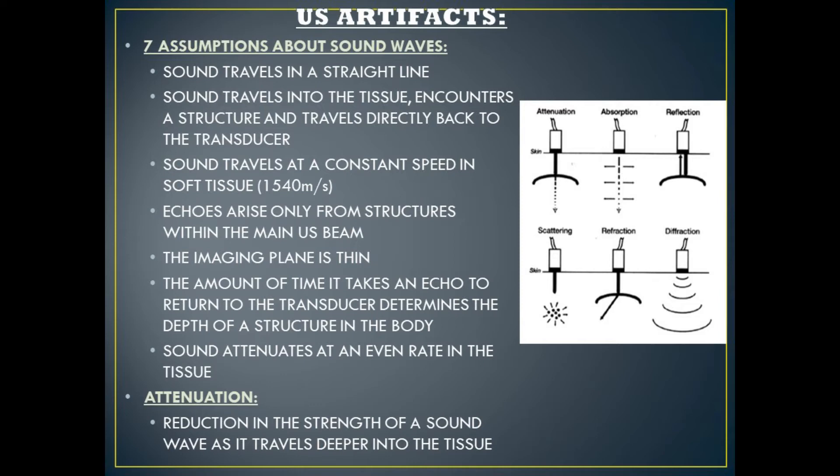Number four, echoes arise only from structures within the main ultrasound beam. Number five, the imaging plane is thin. Number six, the amount of time it takes an echo to return to the transducer determines the depth of a structure in the body. And number seven, sound attenuates at an even rate in the tissue.